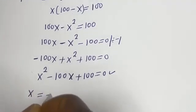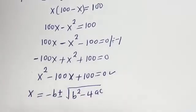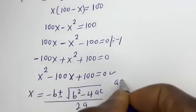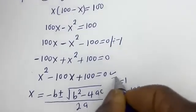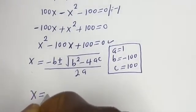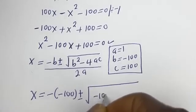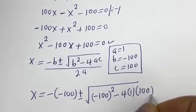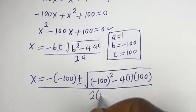So we have x is equal to minus b plus or minus square root of b squared minus 4ac, all over 2a. From this equation, a is equal to 1, b is equal to minus 100, and c is equal to 100. So we have x is equal to minus bracket (minus 100), plus or minus square root of (minus 100) squared minus 4 multiplied by 1 multiplied by 100, everything divided by 2 multiplied by 1.